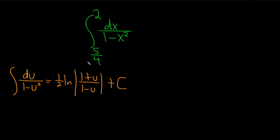So here we can just directly apply the formula because instead of u, we have x. So this is equal to 1 half natural log, absolute value, 1 plus x over 1 minus x. And then you don't need a plus C because it's a definite integral. So I'm going to put a bracket here and instead we'll put the numbers. So 5 fourths and then 2. Okay, let's keep going.